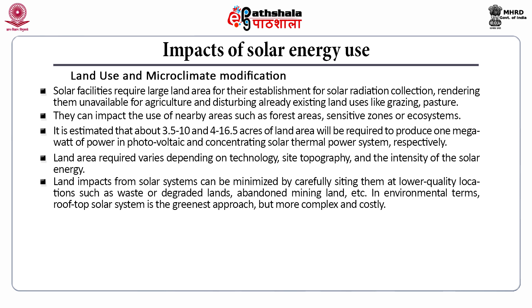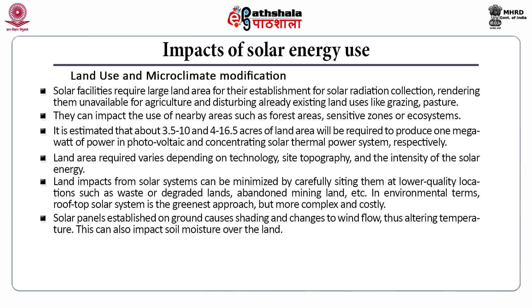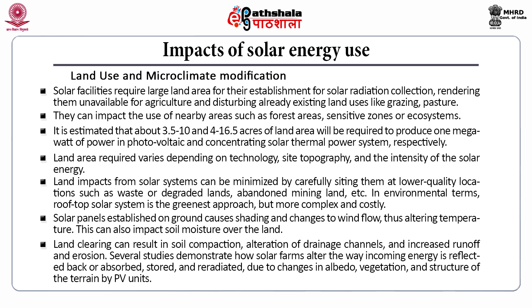In environmental terms, rooftop solar systems are the greenest approach but more complex and costly. Solar panels on the ground cause shading and changes to wind flow, altering temperature and impacting soil moisture. Land clearing can result in soil compaction, alteration of drainage channels, increased runoff and erosion. Studies demonstrate how solar farms alter the way incoming energy is reflected, absorbed, stored and re-radiated due to changes in albedo, vegetation and terrain structure by the photovoltaic units.